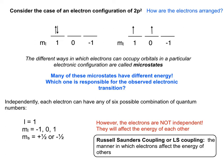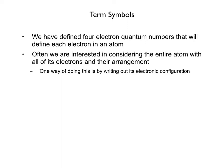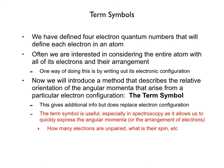Now we can introduce the idea of a term symbol. Drawing analogies to electronic configurations and quantum numbers: we know four unique quantum numbers define every electron in an atom. When thinking about an entire atom's electronic state and transitions, we consider the arrangement of all its electrons. A term symbol describes the relative orientation of the angular momenta arising from a particular electronic configuration.